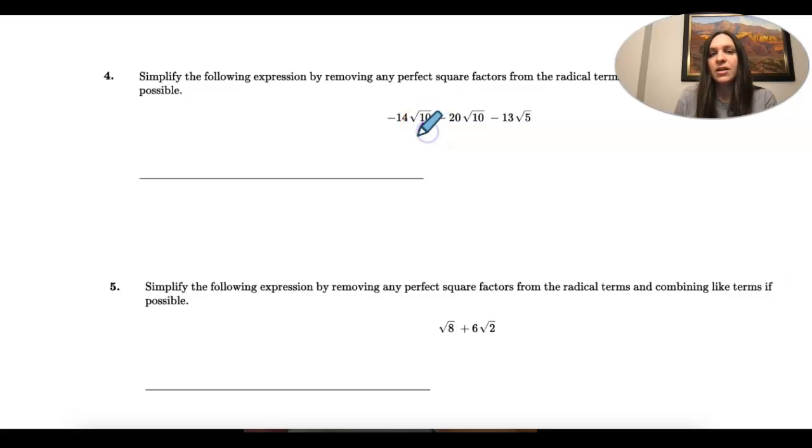I'm going to look at 10 and see if I can pull any terms out. So 10 is 2 times 5, and that's going to just stay 2 times 5. Remember, there's no groups to pull out, so this cannot be simplified.